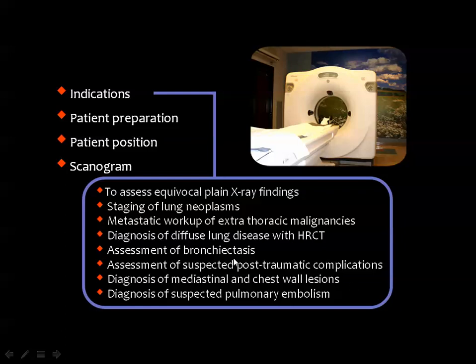Assessment of bronchiectasis is now a role for CT, since the very old and obsolete technique of bronchography has been cancelled from the diagnostic tools. Assessment of post-traumatic complications is another purpose of CT — for mediastinal and chest wall pathology — and we have dedicated lectures on those. A very important indication is to assess suspected pulmonary embolism, because fast CT scanning with intravenous contrast has made CT one of the key tools for vascular imaging today.